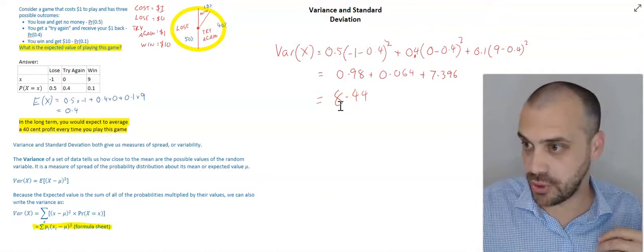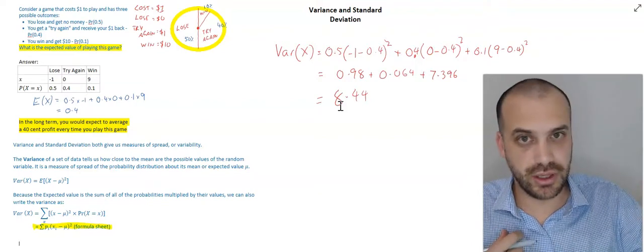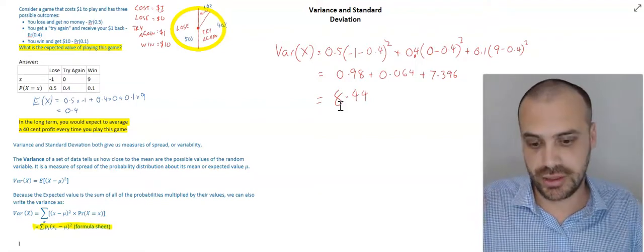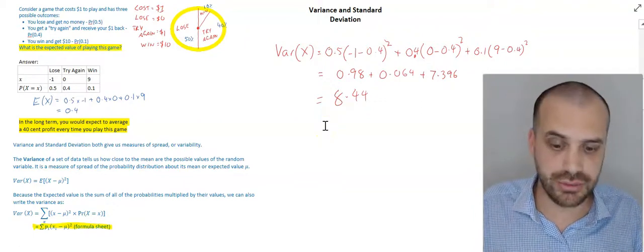This one has a variance of 8.44. This one has a variance of 5. The one with the variance that's lower is less risky. So, I could use the variance to determine which game was less variable, less risky.